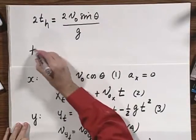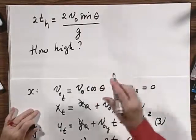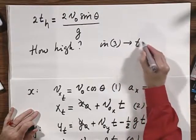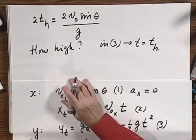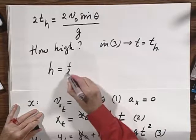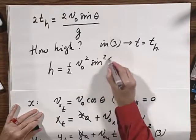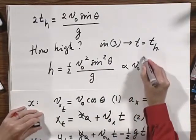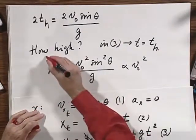Now how high does the object go if we double v0? Well, I substitute in equation three, I substitute t equals t_h, because that's the time that it reaches the highest point. And when I do that, and you can do that for yourself, I find that the height that it reaches equals one-half v0 squared times the sine squared of theta divided by g. And that is proportional to v0 squared. Let's also put this in a nice red frame.